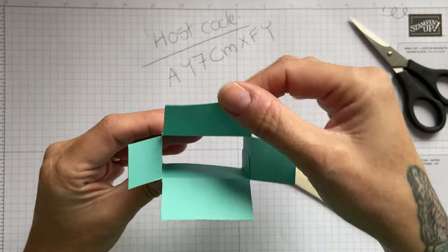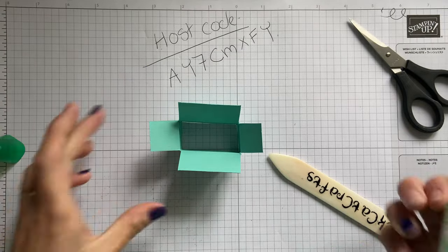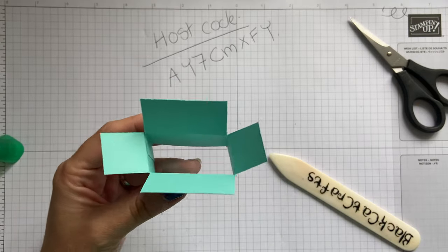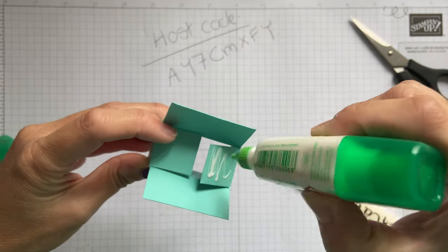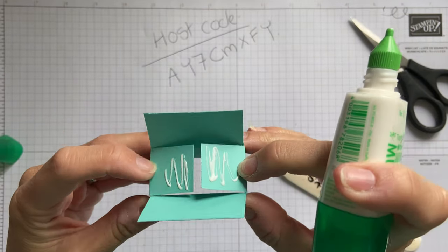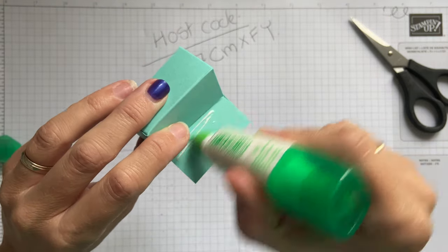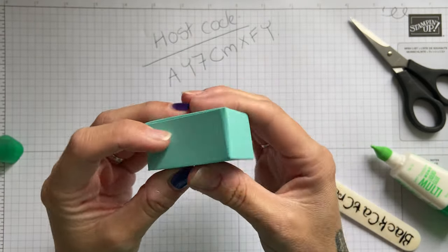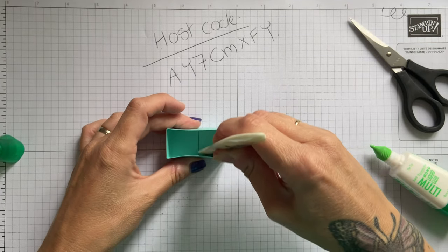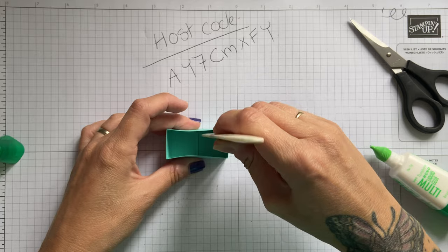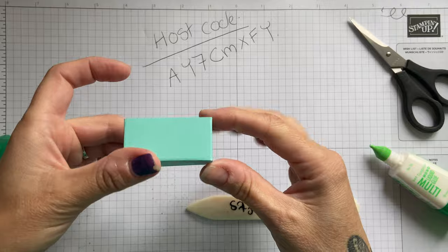Now we're going to pop these bits in. So we do the two middle ones first. I'm going to fold that one down. And then I'm going to fold that one on top. I'm going to turn that over using my bone folder just to make sure that's all stuck. And that's a little box.